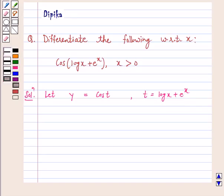Now dy/dt, differentiating with respect to t, we get dy/dt = -sin t. And differentiating with respect to x, we get dt/dx = 1/x + e^x.